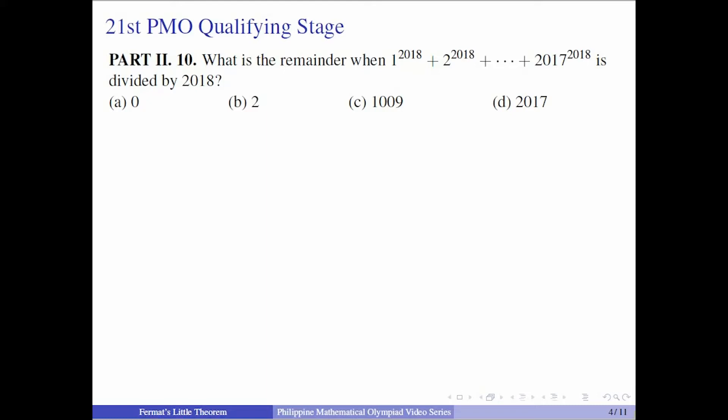Note that the given number 2018 is not a prime. So how come we can use Fermat's Little Theorem? Actually, you can use Euler's Theorem, but for the purpose of this topic on Fermat's Little Theorem, we will be using it instead. We know that the prime factorization of 2018 is 2 times 1009. We will be looking at the remainder of the sum separately when divided by 2 and when divided by 1009.